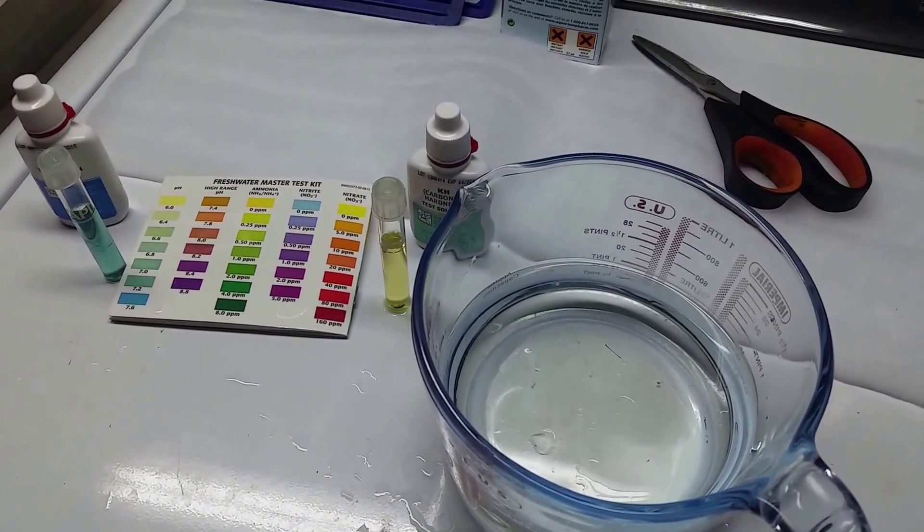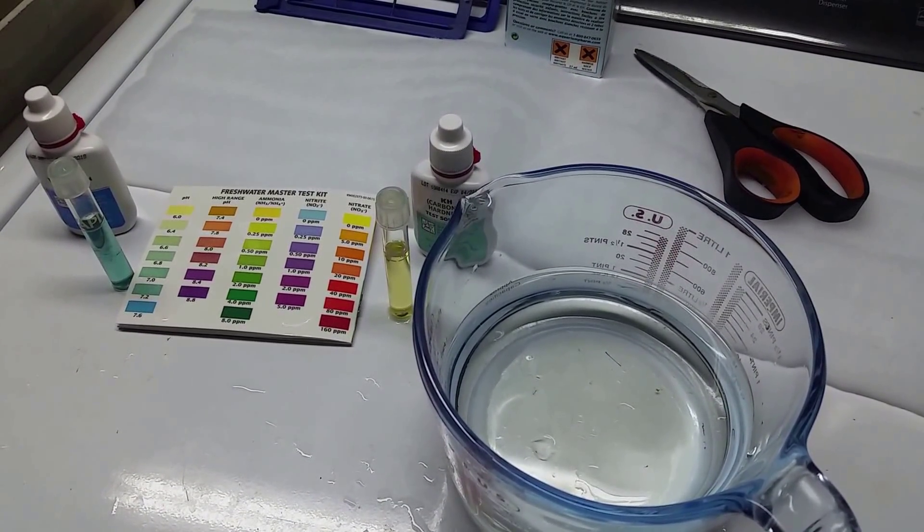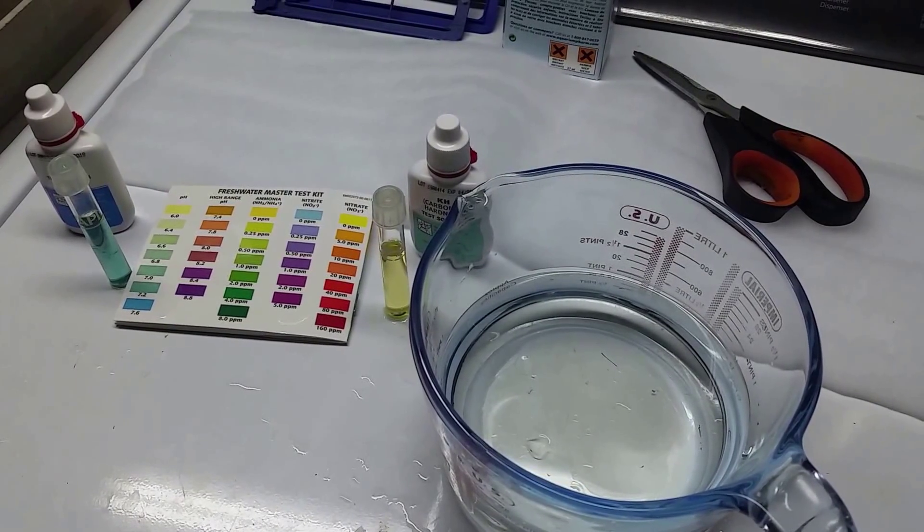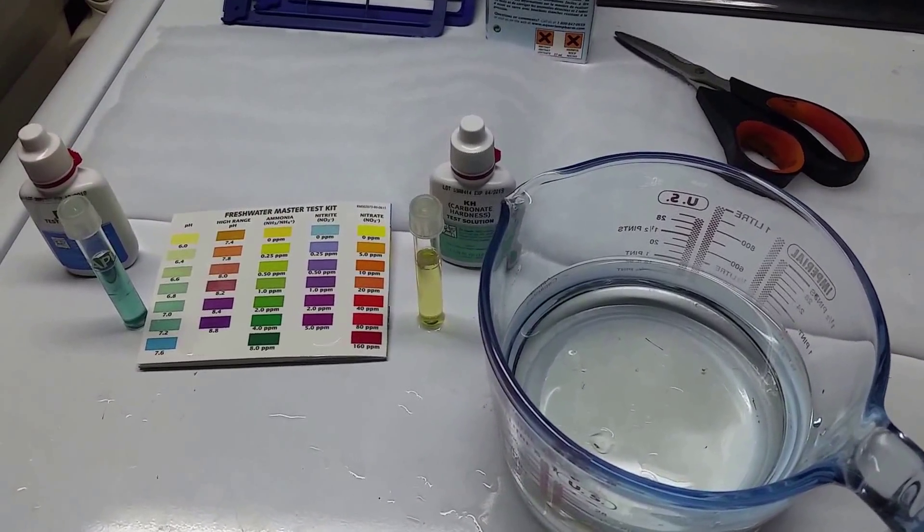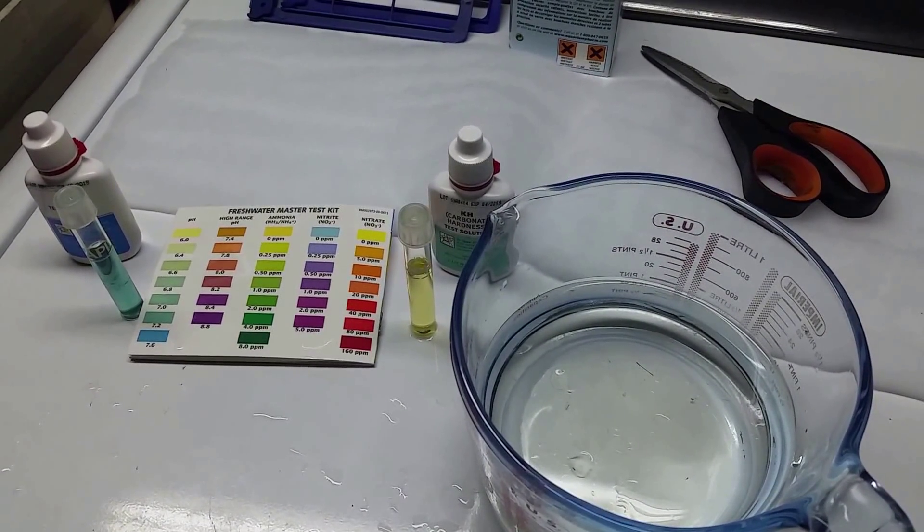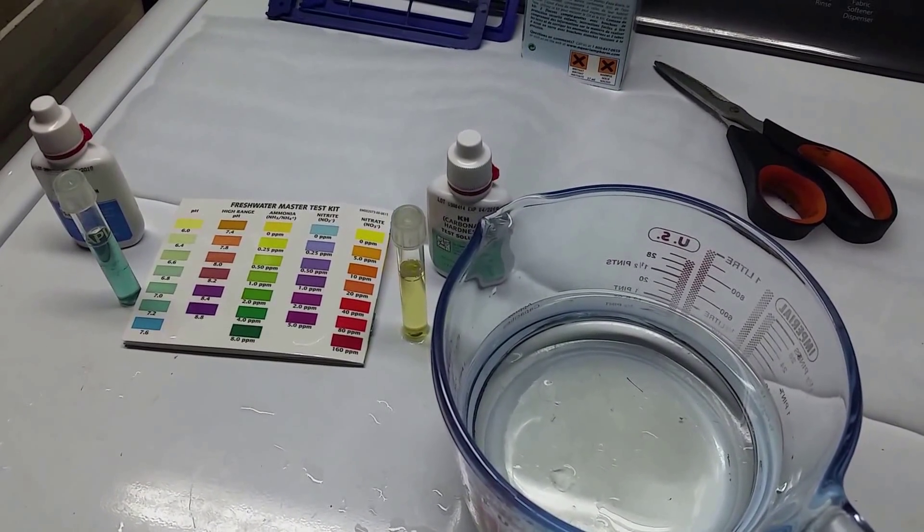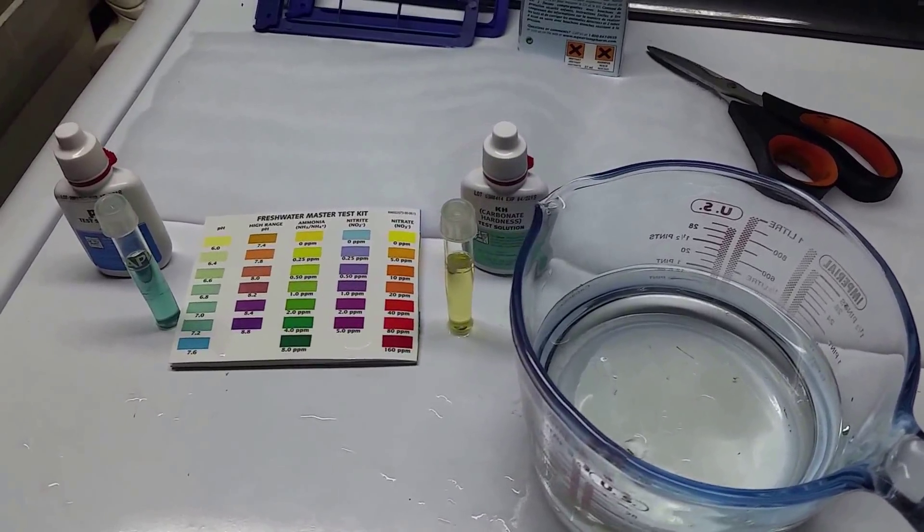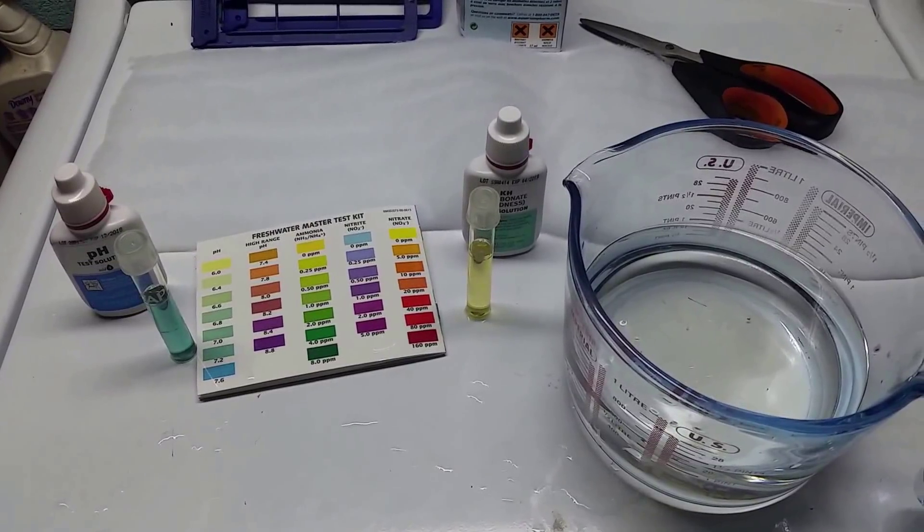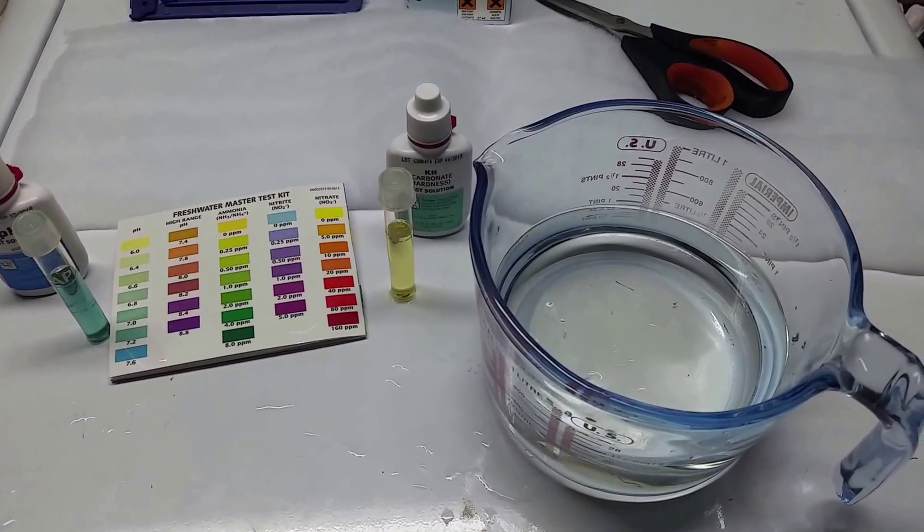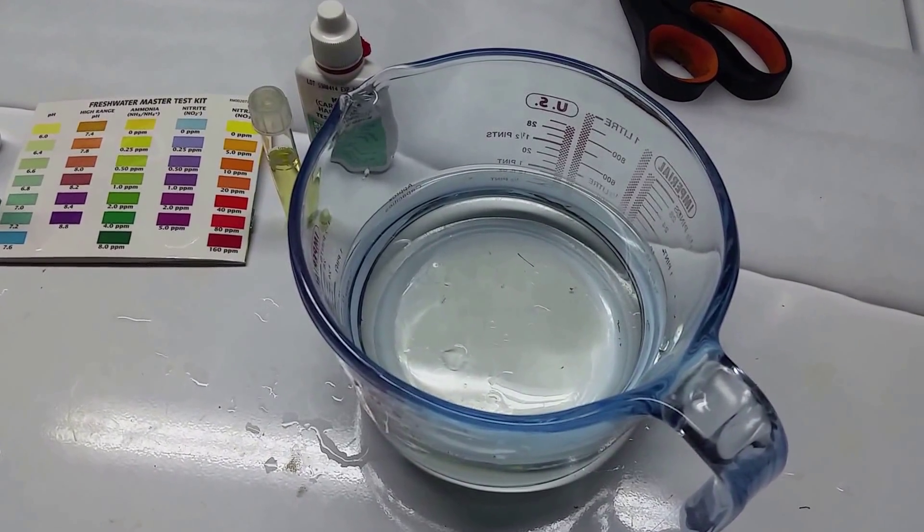The way the carbonate hardness test works is you take your sample of water, put drops in that turn it blue, shake it, and count each drop. When the water suddenly turns yellow, that number is your carbonate hardness. In this case it was the third drop, so I have three degrees of carbonate hardness and a neutral pH, which gives me an estimated CO2 value of 10 parts per million.